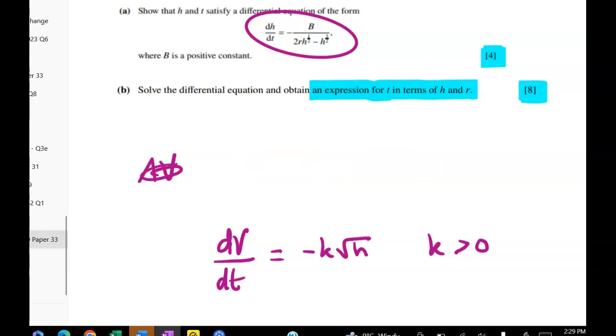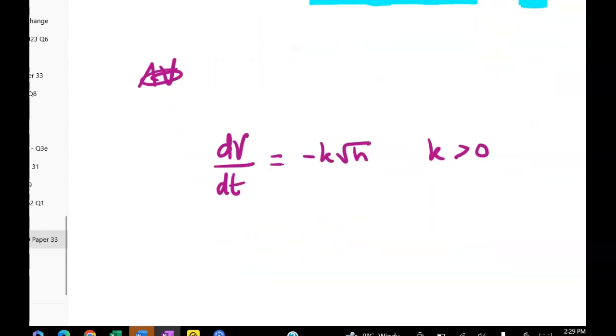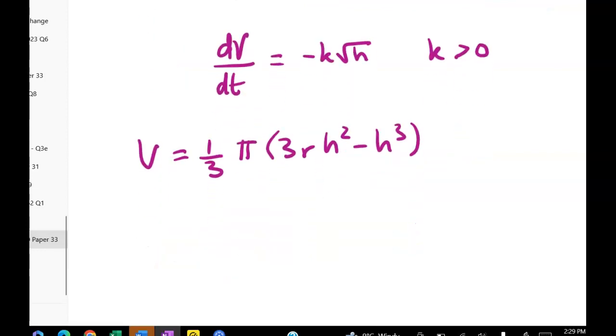All right so what do we know? Well we've got an expression for V. So V is equal to one third pi times three R H squared minus H cubed. That gives me the volume at any point in time depending on the height and the radius. Remember this R is the radius at the top of that hemispherical tank. So we can write V as pi R H squared minus one third pi H cubed.